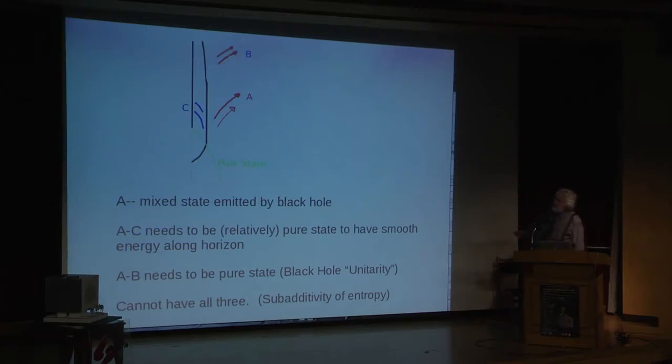What the particle physicists would like is that this radiation coming out here and the total of all the radiation coming out of the black hole should be a pure state if the black hole was formed by a pure state. Therefore there must be strong correlations, entanglement, between this radiation and this radiation out here.